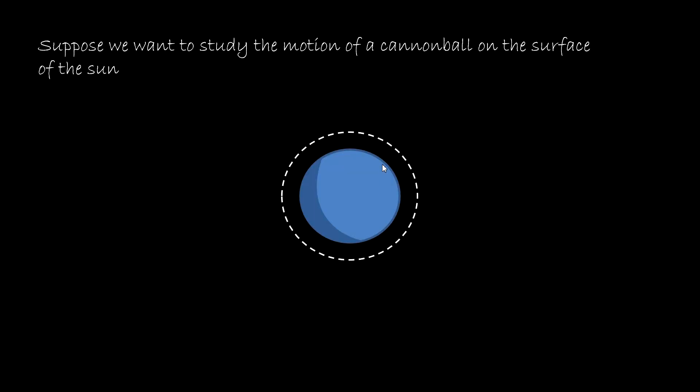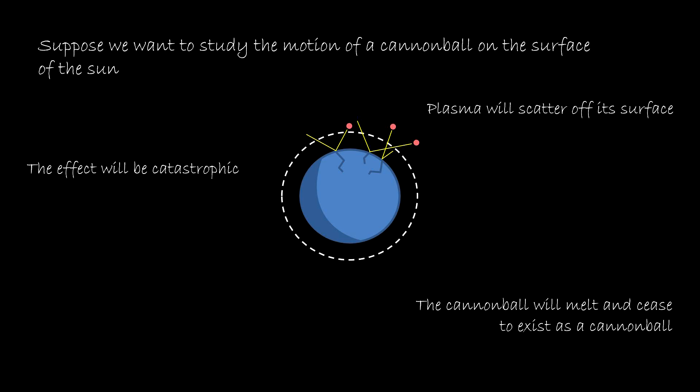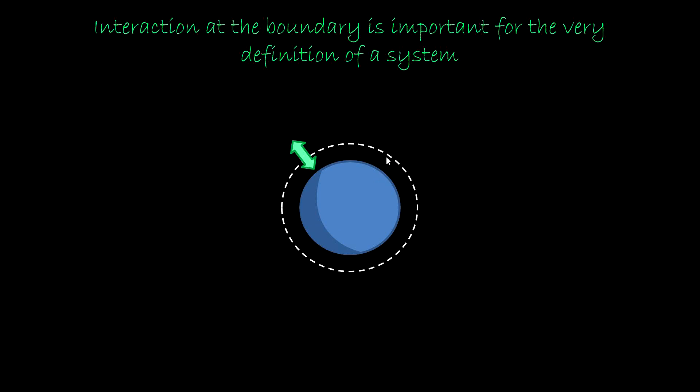The state of the speck of dust will be taken to be a probability distribution over position and momentum. Lastly, suppose we want to study the motion of a cannonball on the surface of the sun. Plasma will scatter off its surface, and the effect will be catastrophic. The cannonball will melt and cease to exist. The point here is that interaction at the boundary is important for the very definition of a system.